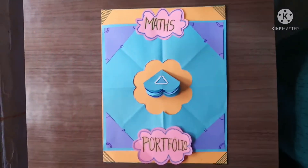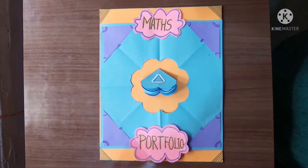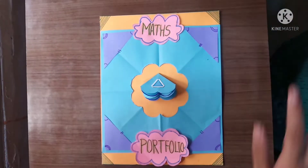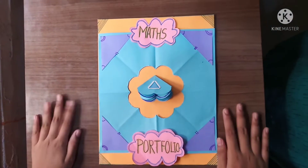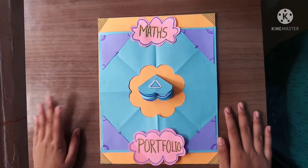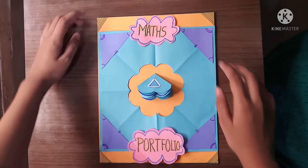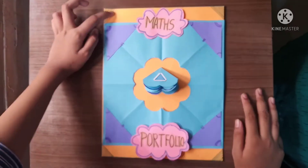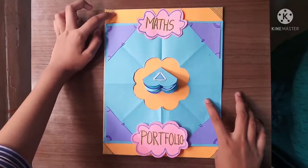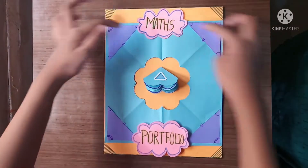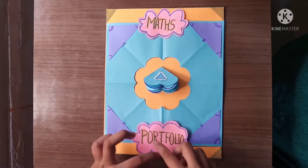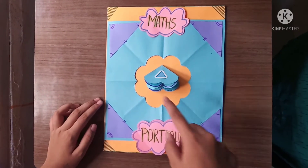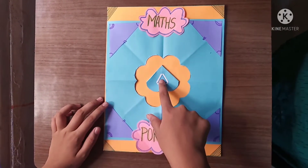Good morning friends, I am Anam from class 7A and today I am going to show you my math portfolio. Here I have taken two color papers, one orange and one blue. I have taken the blue color paper and cut it into a square, and here I have cut a flower.